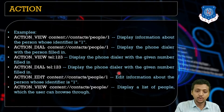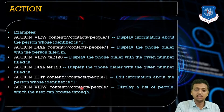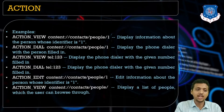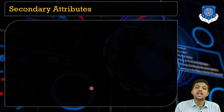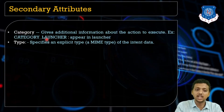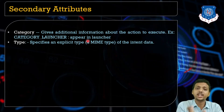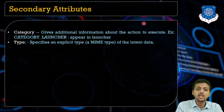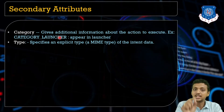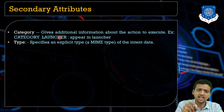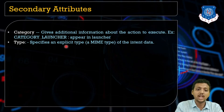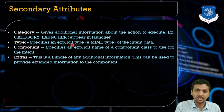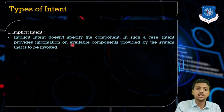ACTION_VIEW with content://people displays the list of people — that is the action and the data. In addition to action and data, there are secondary attributes such as category. For example, in your AndroidManifest.xml, the category CATEGORY_LAUNCHER indicates that this is the launcher activity — the one that runs first when you tap the app icon. You can also specify type, components, and extras with the help of intent.